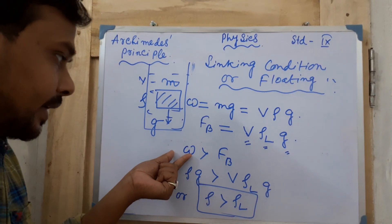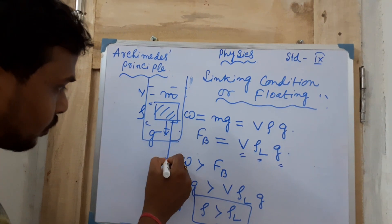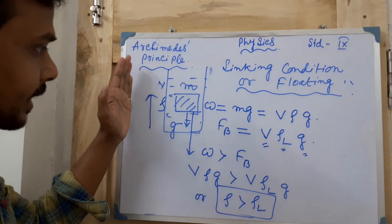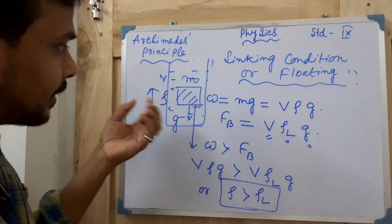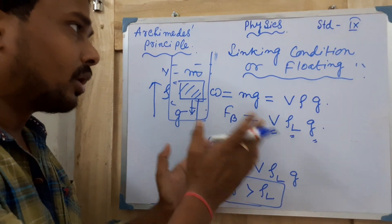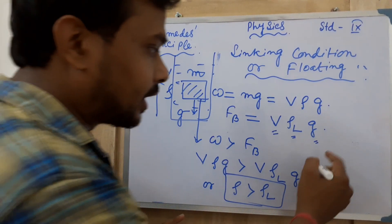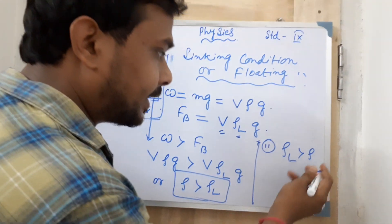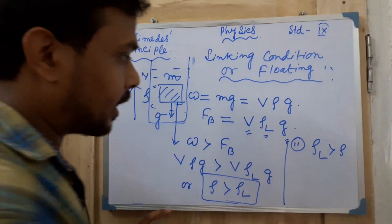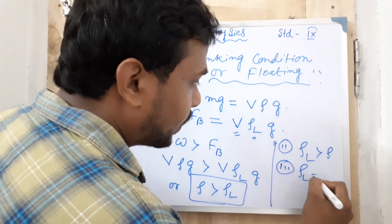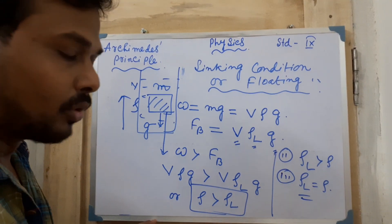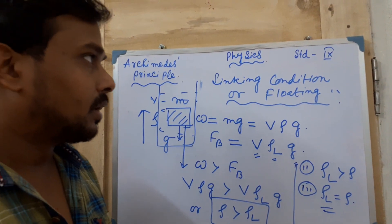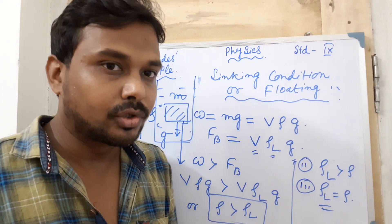If ρ > ρL, the downward force is greater than upthrust, so the body will sink. If ρL > ρ, then upthrust is greater than weight and the body will float. If both are equal (ρ = ρL), the body will also float. These are the three conditions for sinking and floating. In the next video, I will complete the exercise questions. Thank you for today.